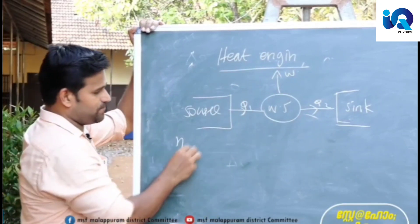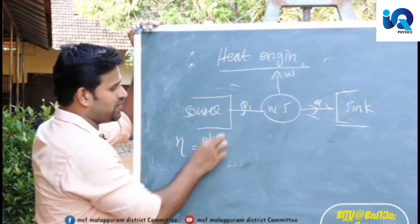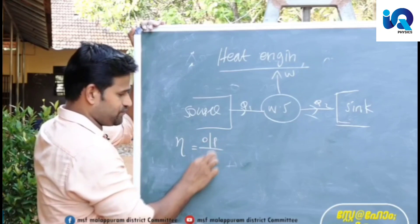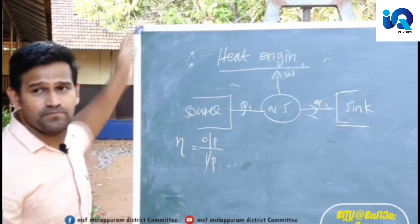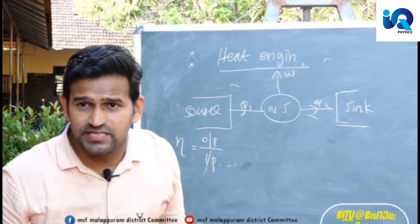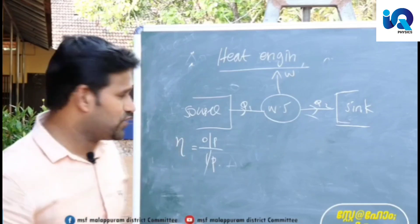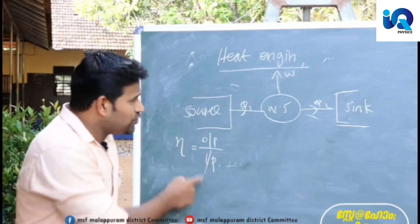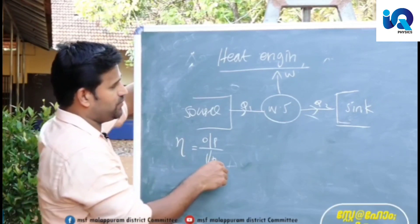Efficiency is the output by input. Output by input. The efficiency is output by input. If we write this, output by input — the work output by input.